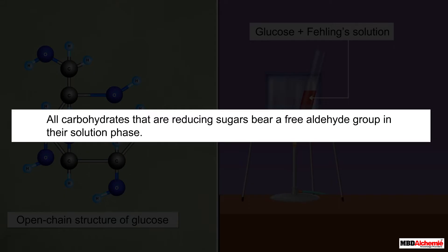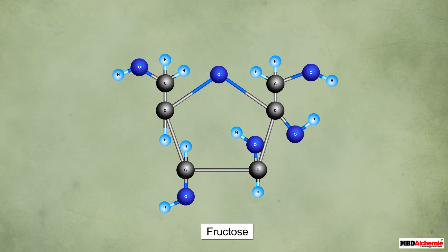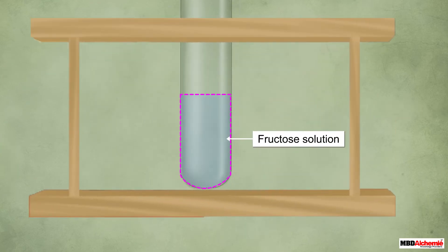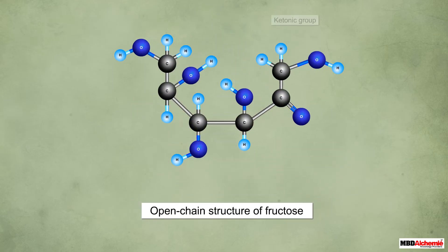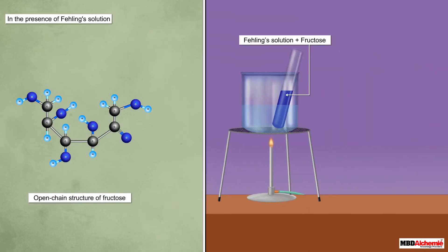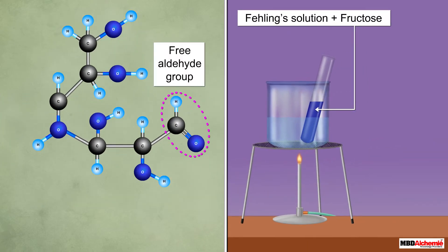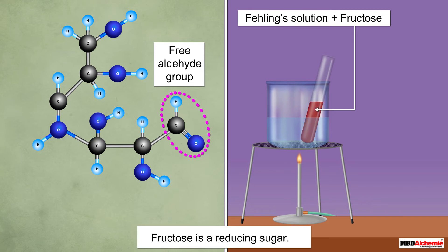All carbohydrates identified as reducing sugars bear a free aldehyde group in their solution phase. Fructose is also an example of such a carbohydrate. It is a monosaccharide with a hemiacetal group in its cyclic structure. In the solution of fructose, the ring structure opens up and the hemiacetal group changes to a ketonic group. Interestingly, under the conditions of reaction with Fehling's solution, the open-chain structure of fructose isomerizes to the open-chain structure of glucose. This way, fructose has a free aldehyde group in its solution phase and is a reducing sugar.